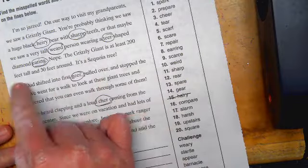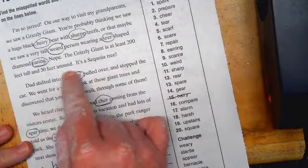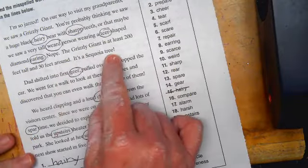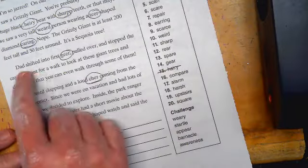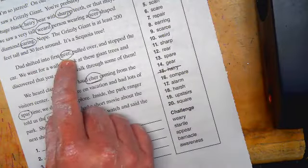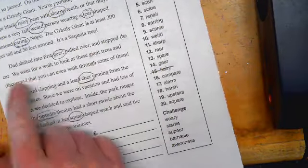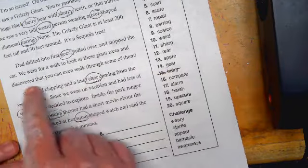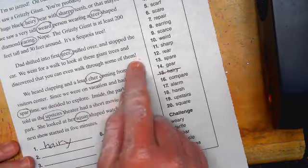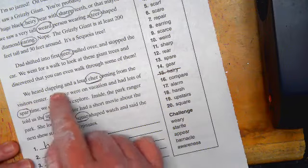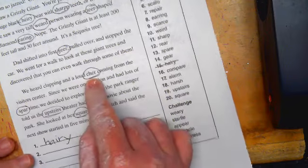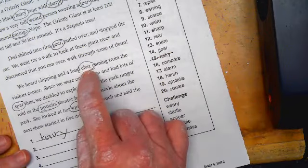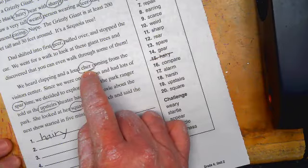The grizzly giant is at least 200 feet tall and 30 feet around. It's a sequoia tree. Dad shifted into first gear, pulled over and stopped the car. We went for a walk to look at these giant trees and discovered that you can even walk through some of them. We heard clapping and allowed cheer. That is not how. Cheer has to have two E's.